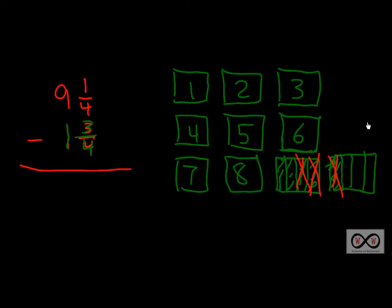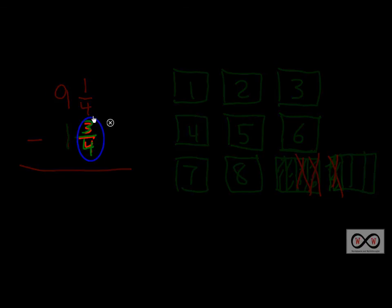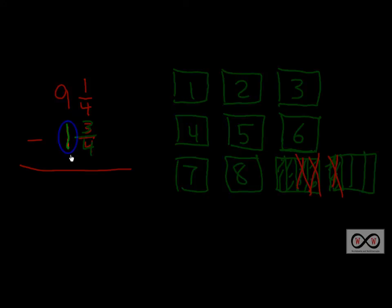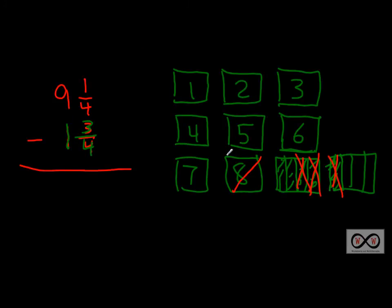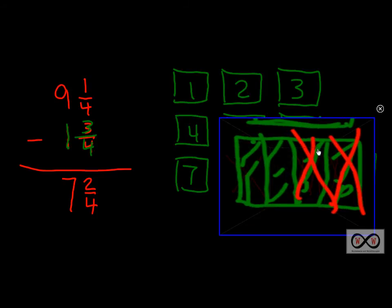Let's go ahead and take away one-fourth, two-fourths, and three-fourths — leaving us with two-fourths. We've dealt with those three-fourths and taken them away. Now we also have to subtract the one whole, so we get rid of that eighth whole gallon. Now we are left with seven and two-fourths gallons of fuel. Eight minus one is seven, so seven and two-fourths, and you can see that two-fourths is really half a gallon.